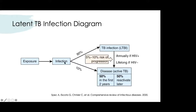The great majority of the time, after exposure and infection, people will develop latent tuberculosis. Always get an HIV test when diagnosing someone with latent or active TB. The risk of progression from latent to reactivation TB is 5–10% lifelong if HIV-negative, but if the person has HIV, the risk is 5–10% annually — which accumulates significantly.